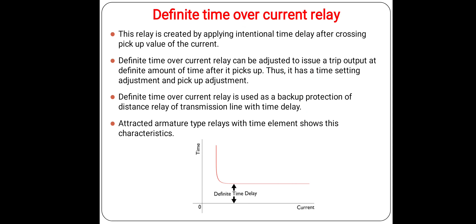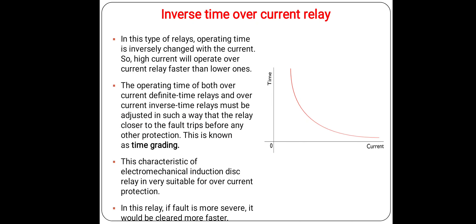One important point is that a definite time overcurrent relay can be adjusted to issue a trip output at a definite amount of time after it picks up. Thus it has both a time setting adjustment and a pickup adjustment facility available.